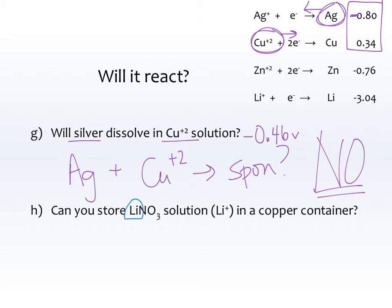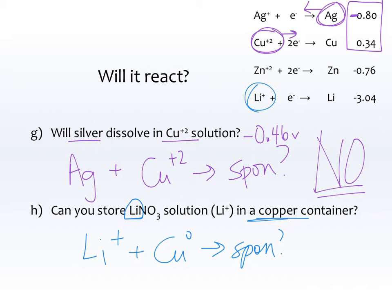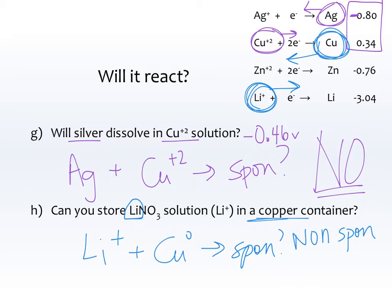Can you store lithium nitrate — Li⁺ — in a copper container (Cu⁰)? We want the lithium to go forward and the copper to go in reverse. Is this spontaneous? No — it is non-spontaneous, because copper is higher on the list and should be reduced, not oxidized. But the question is: can you store it? If you store it, nothing will happen because the reaction is non-spontaneous. So actually, yes — you can store it.